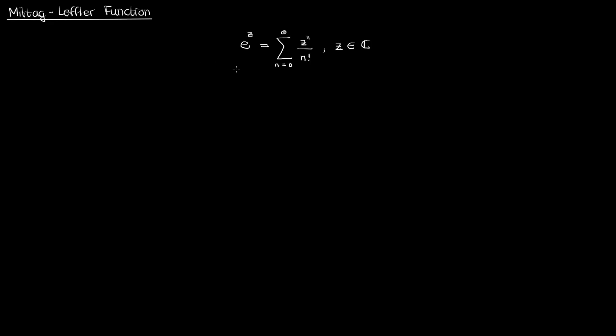But what if I modify the term in the summation just a bit? Let's replace the z by negative z squared and the n factorial by 2n factorial. If I do that, this is what I get. I'll simplify the negative z squared term a bit and take out the negative 1 to end up with this expression.